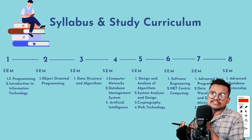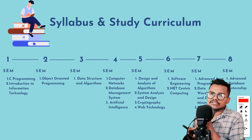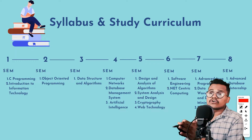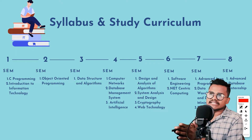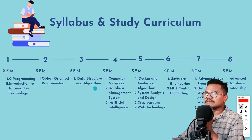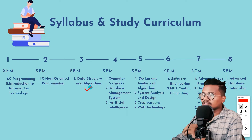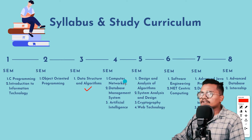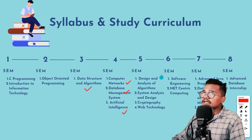In the first semester, there is a programming language. In the second semester, there is an introduction to information technology and object-oriented programming concepts. In the third semester, there is data structures and algorithms. In the fourth semester, there is computer networks, database management systems, and artificial intelligence.